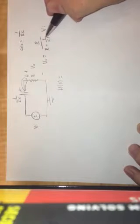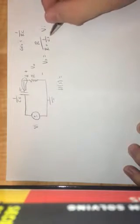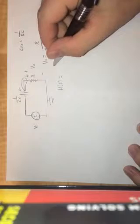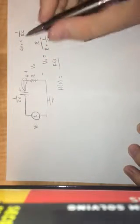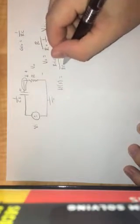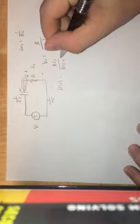So H of S, we're still in the S domain right here, is equal to this formula. If we multiply everything by CS to get rid of that fraction, we have RCS divided by RCS plus 1.